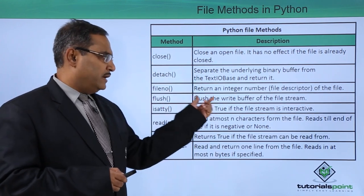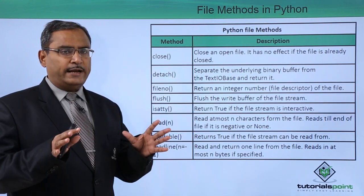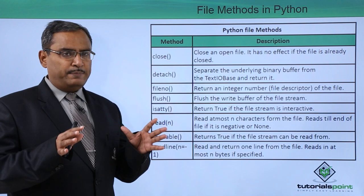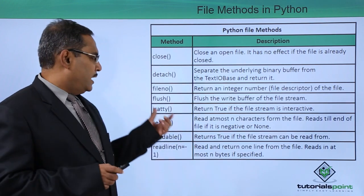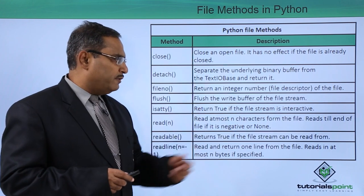We are having flush - flush the write buffer of the file stream. Whatever characters are there in the write buffer, they will be cleared. Our next one is isatty - returns true if the file stream